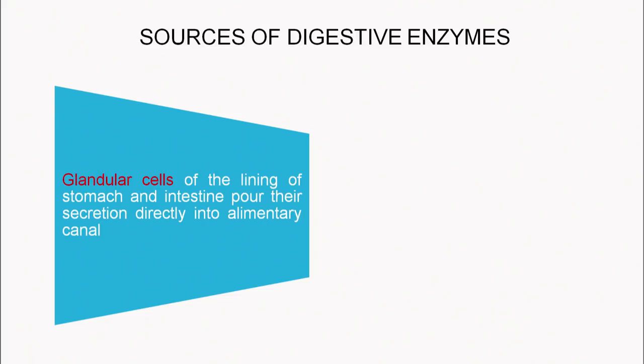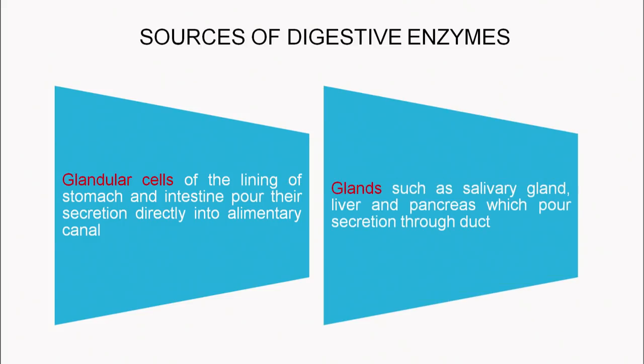Moving on to the cells which secrete enzymes that help in digestion — there are glandular cells present on the lining of the stomach and intestine that pour their secretions directly into the alimentary canal. There are also certain glands such as the salivary gland, liver and pancreas, which pour their secretion through a duct into the alimentary canal.